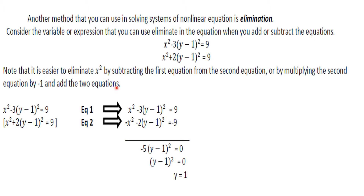We can use either subtraction or addition. If we use the subtraction method, we can directly subtract the first and second equations. If we use the addition method, we need to multiply the second equation by negative 1 and then add. So we have x squared minus 3 times the quantity y minus 1 squared equals 9, and x squared plus 2 times the quantity y minus 1 squared equals 9. We multiply both sides by negative 1 and then add.